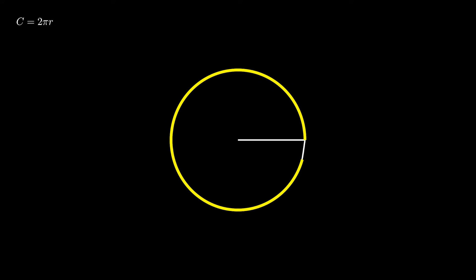It actually, in fact, goes around the circle two pi times. So the circumference is actually equal to two pi times the radius.